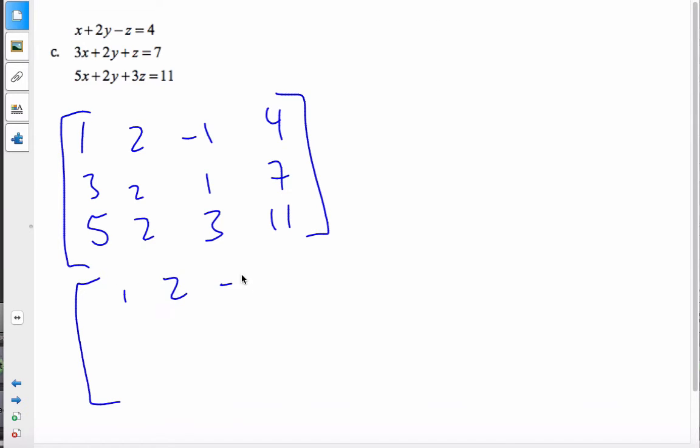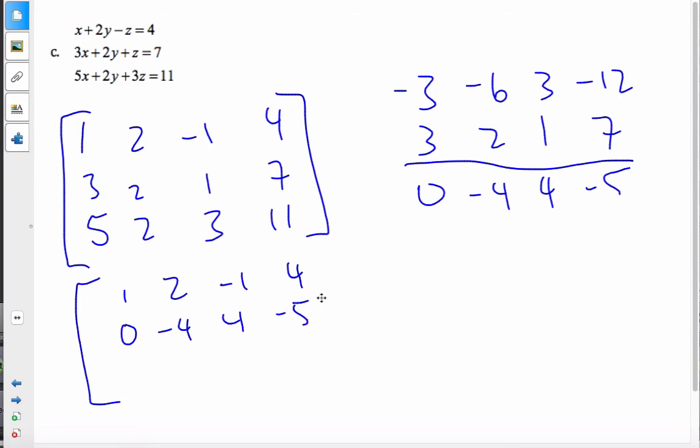So, I'm going to start with the first line. So, I get 1, 2, negative 1, 4. Let's try that again. I'm going to multiply this by negative 3. So, negative 3, negative 6, 3, negative 12. The reason why I multiply the first line by negative 3 is so that I can add it with the second line. And get 0, negative 4, 4, and negative 5. So, 0, negative 4, 4, and negative 5.